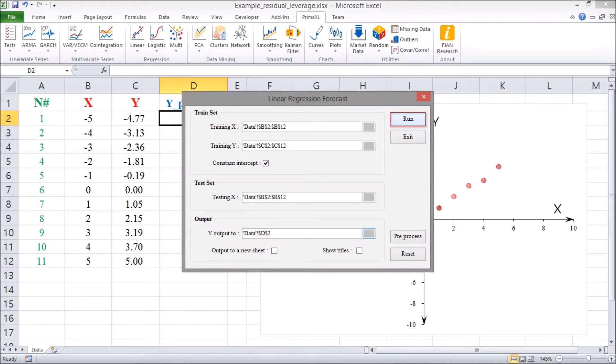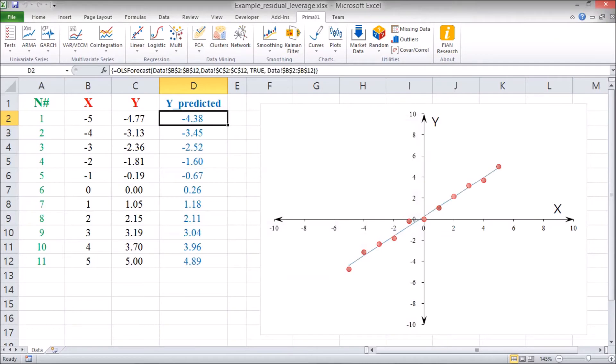Finally, we press the Run button to execute. The result is the estimation of the variable y by the linear model. Here, in the plot, the estimation is shown as a blue straight line.